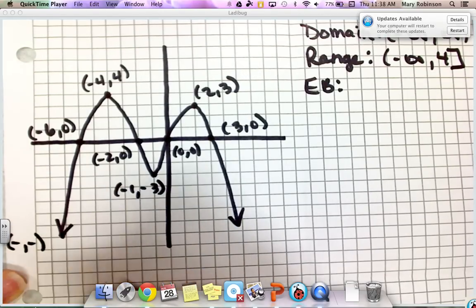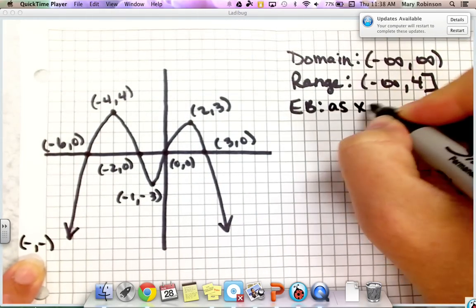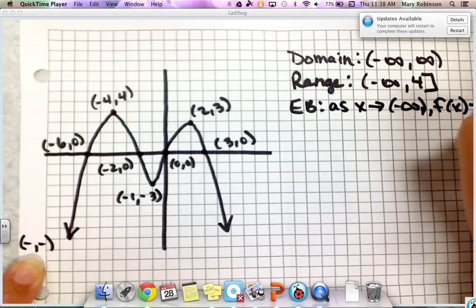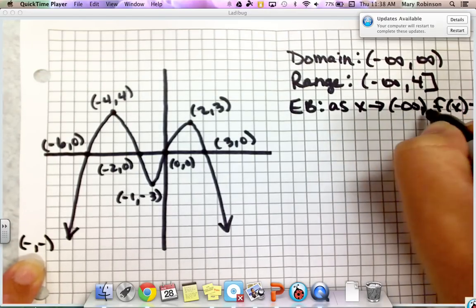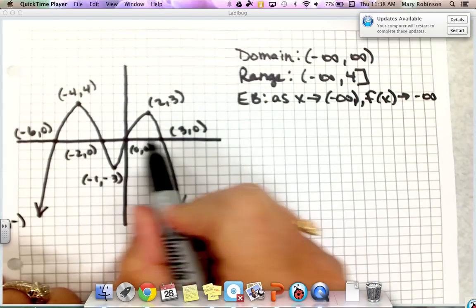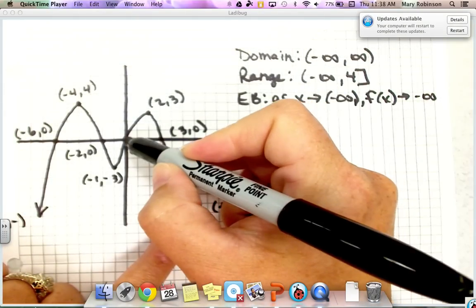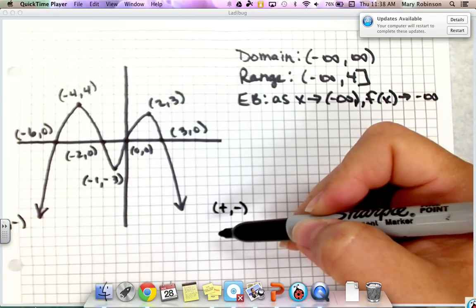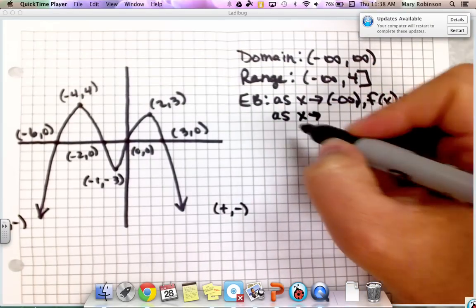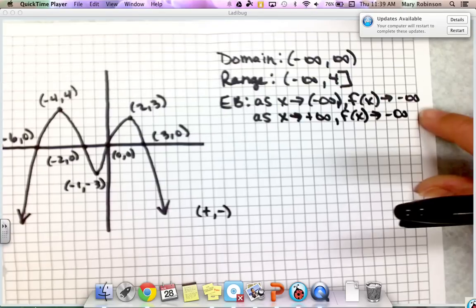To write our end behavior: think about all the points in the quadrant where the graph goes down-left — those are negative x, negative y. So as x approaches negative infinity, f(x) also approaches negative infinity. On the right side, we have positive x and negative y, so as x approaches positive infinity, f(x) approaches negative infinity. That indicates both ends go down.